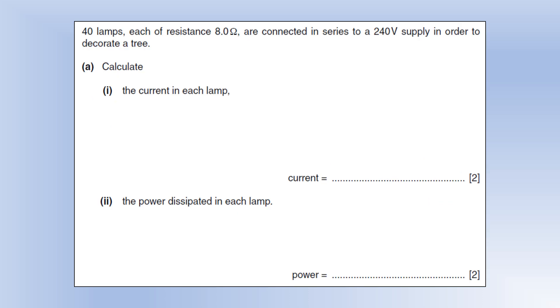Next question, we've got 40 lamps, each of resistance 8 ohms, connected in series to a 240 volt supply. Calculate the current in each lamp. While they're in series, they'll all have identical current, and we'll find that current by figuring the total resistance.